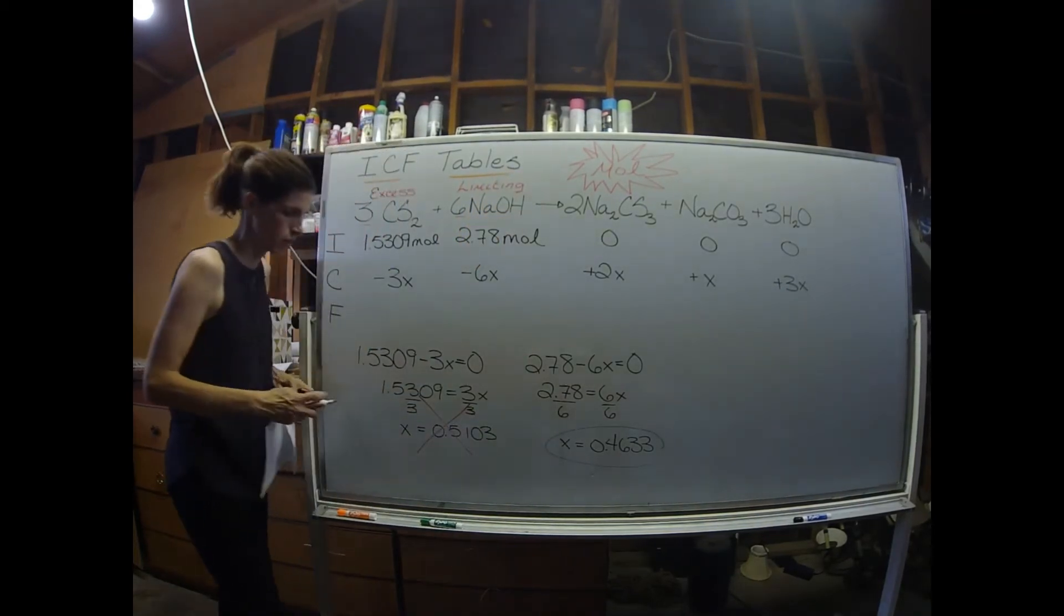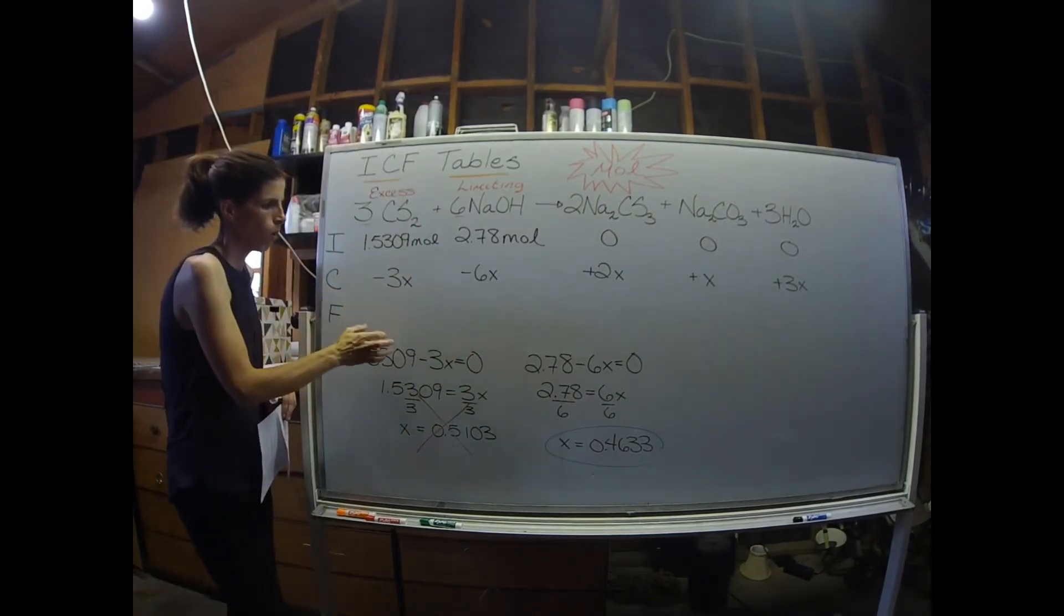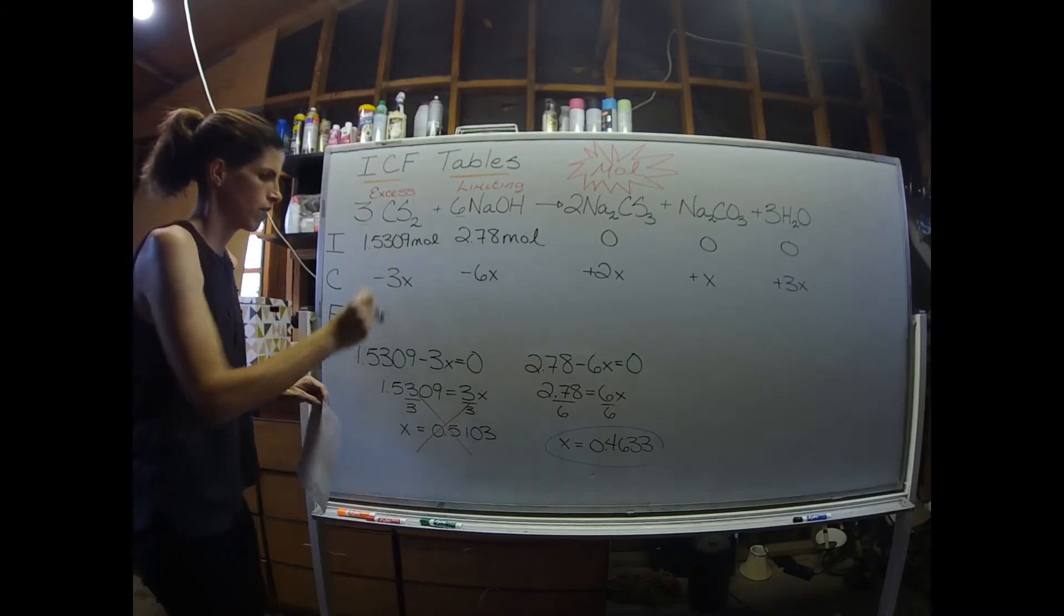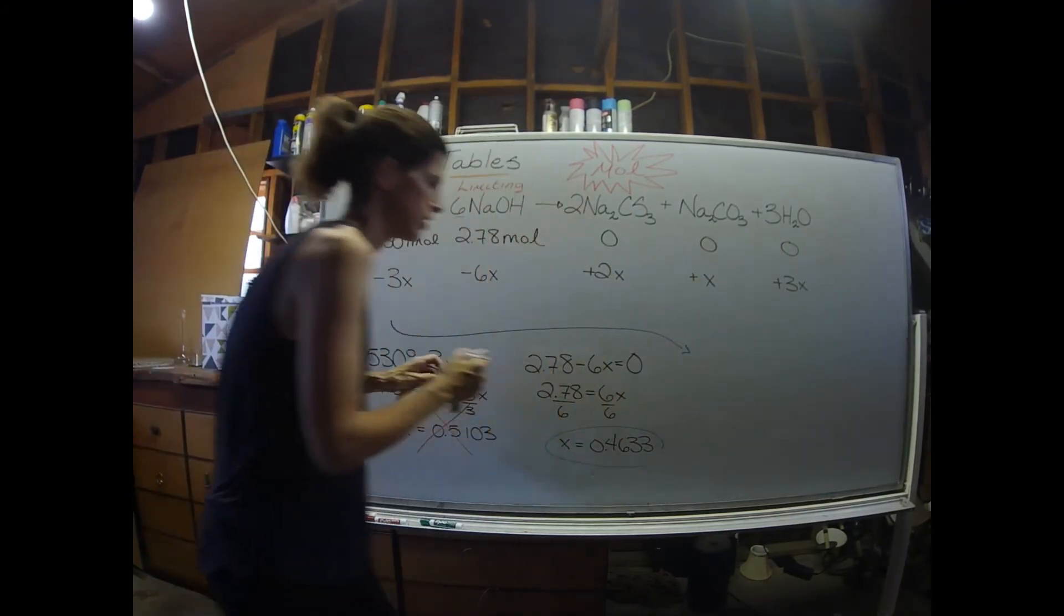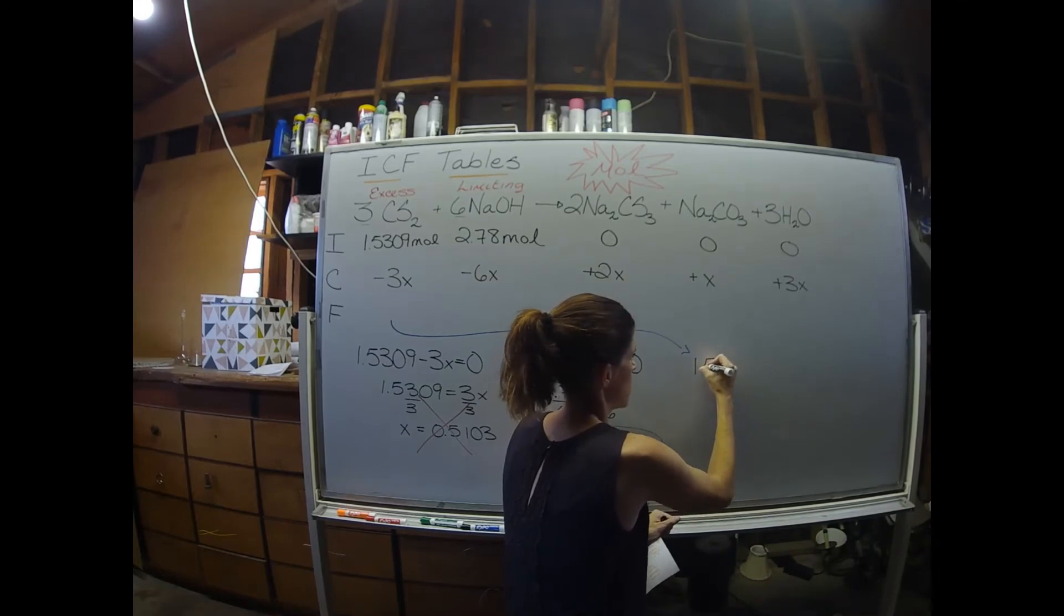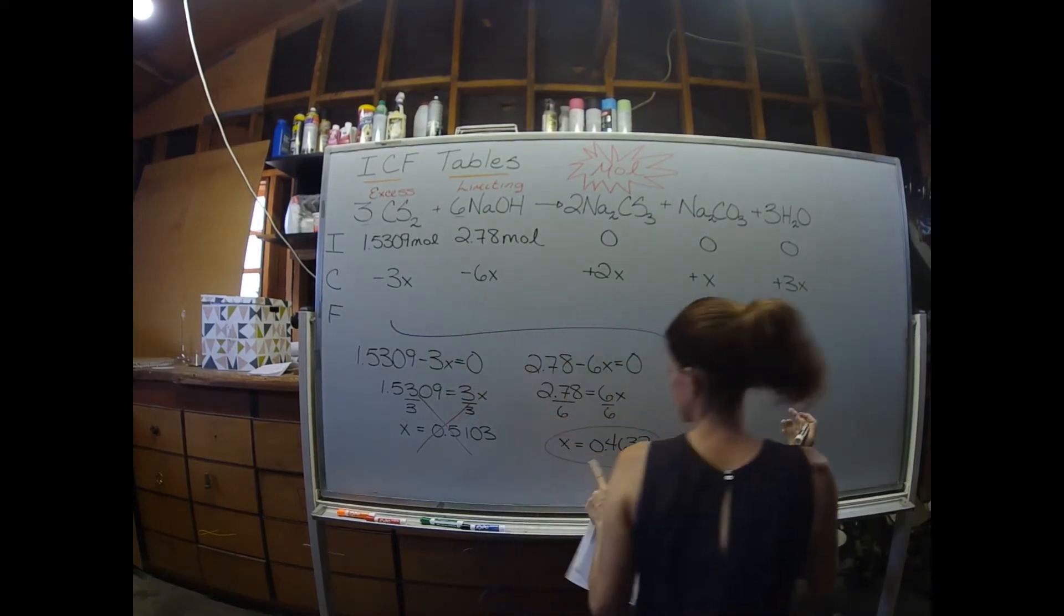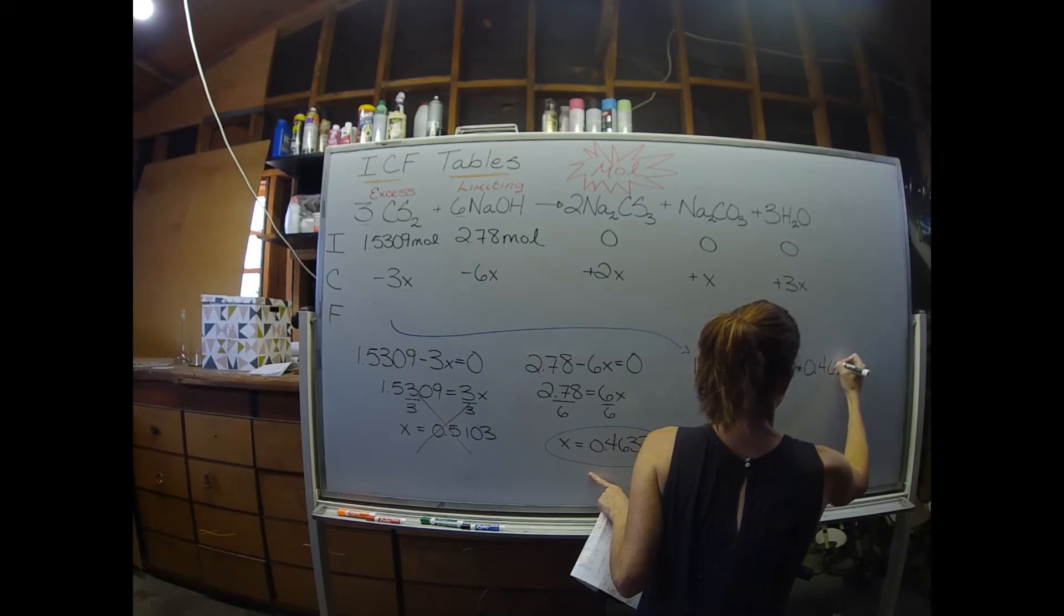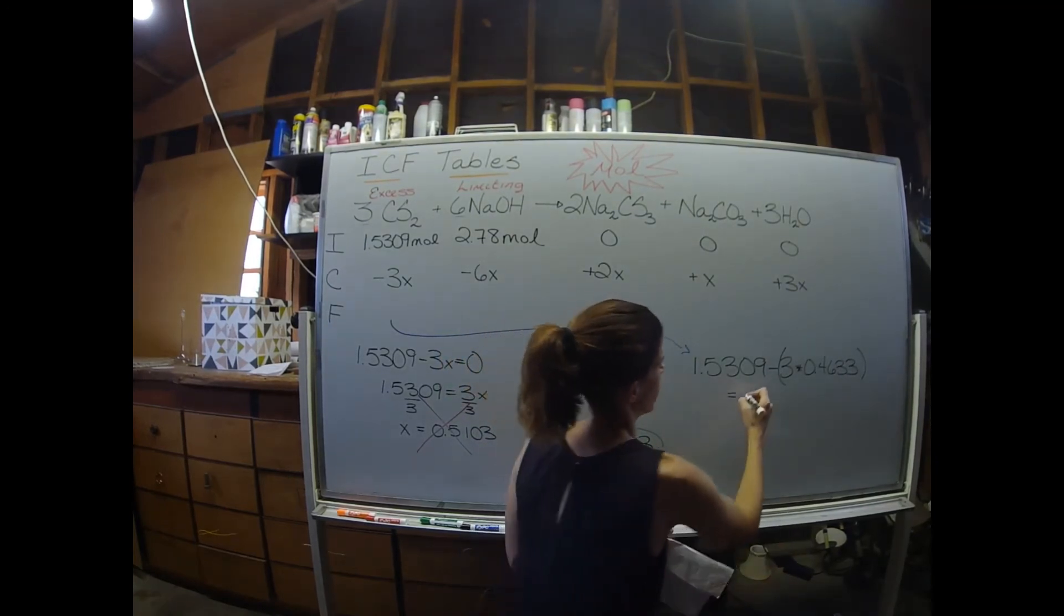But this is the x value I'm going to want to use. So our next step then is to plug in this x value into all of these columns and solve for the final number of moles. Let me show you what that looks like for the carbon disulfide. So we're going to kind of use the same algebraic equation that we just did: 1.5309 and it's minus 3x. But instead of just leaving it as x, plug in the smaller of the 2x values. So I'm going to do minus 3 times 0.4633.